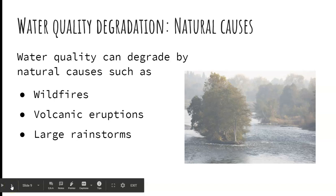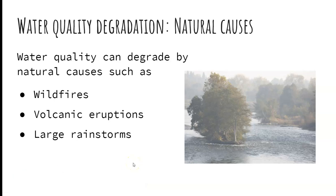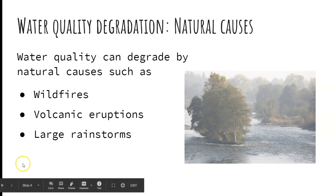Water quality can be degraded by both natural causes and human activities. Some of those natural causes are wildfires, which is something we should be considering right now in terms of materials and chemicals coming off forested areas. Volcanic eruptions contribute through aerosols and ash going into streams, and large rainstorms can produce a lot of runoff that degrades water quality in streams.